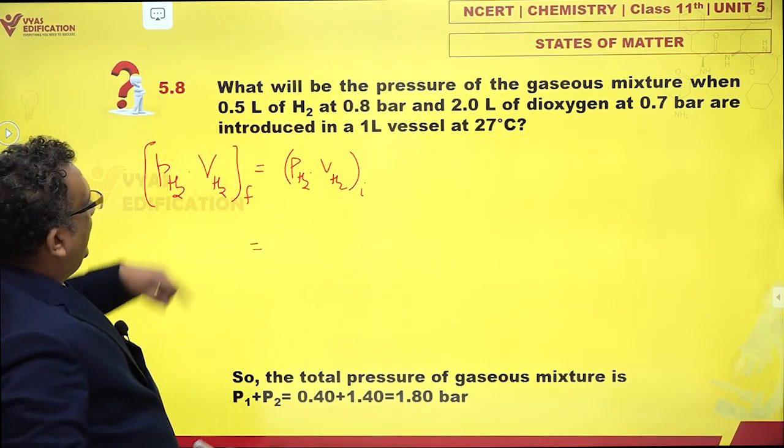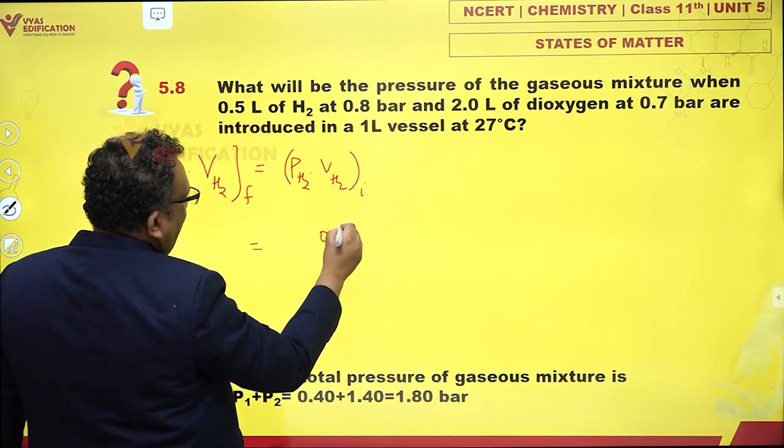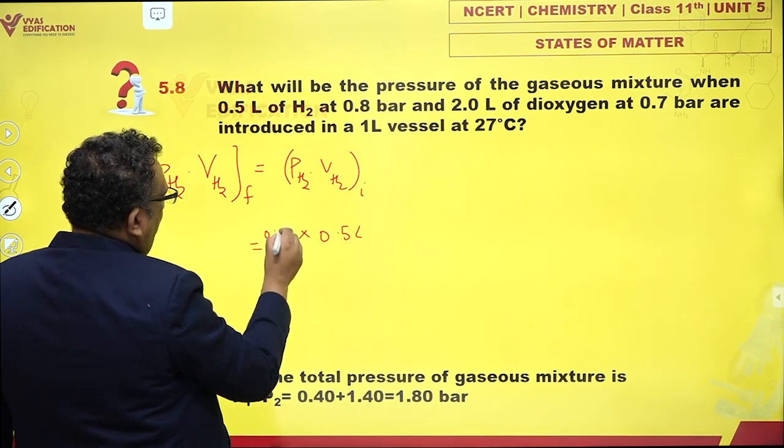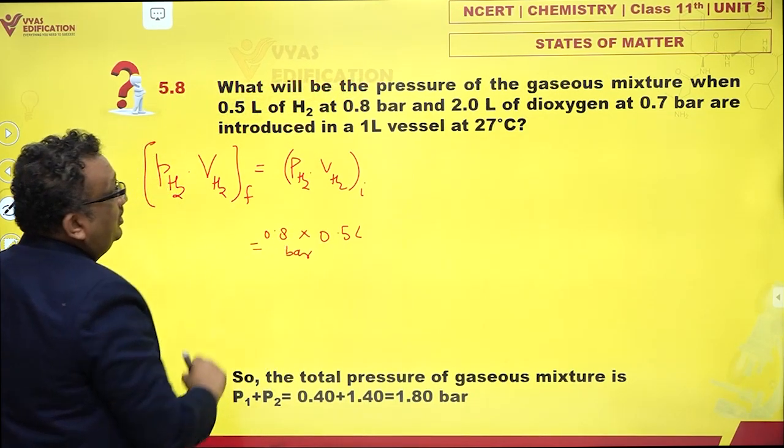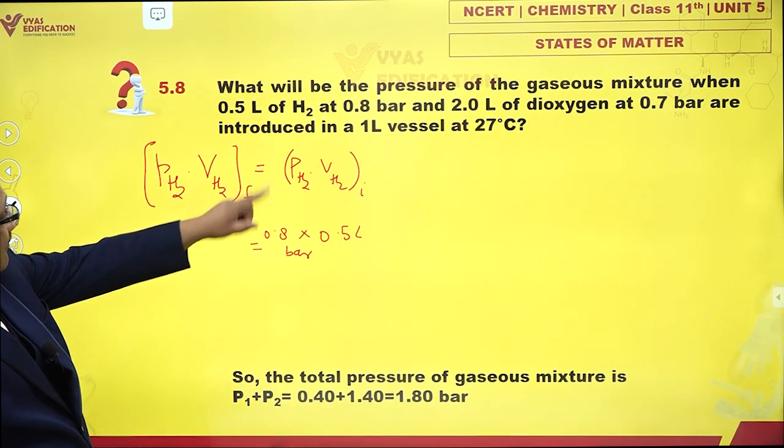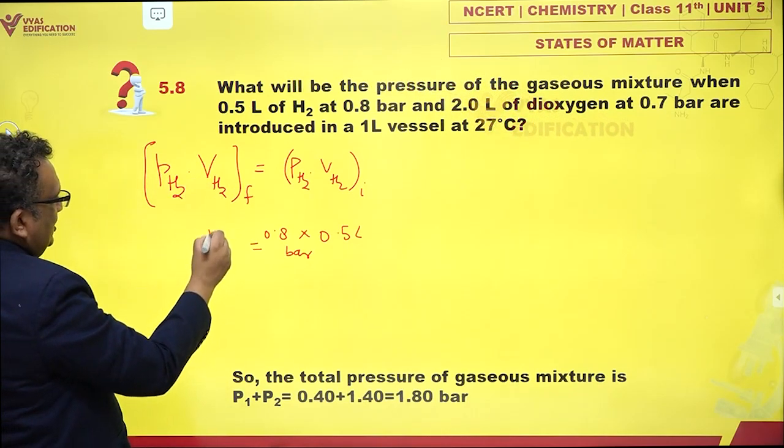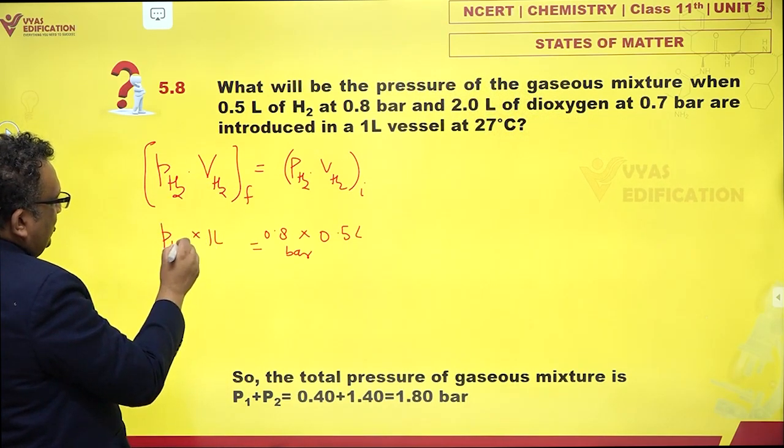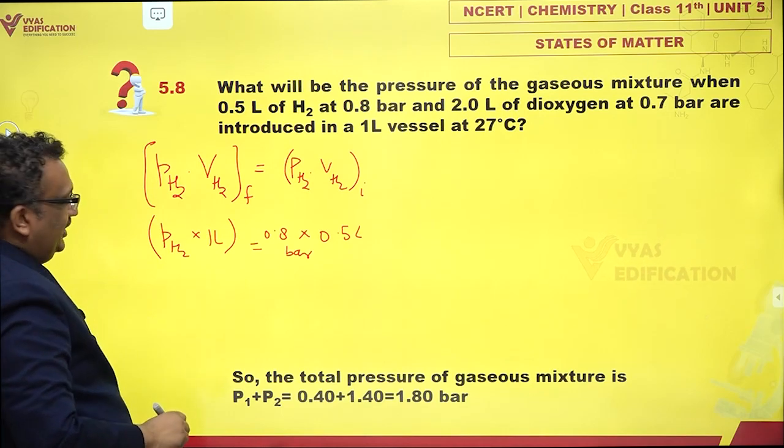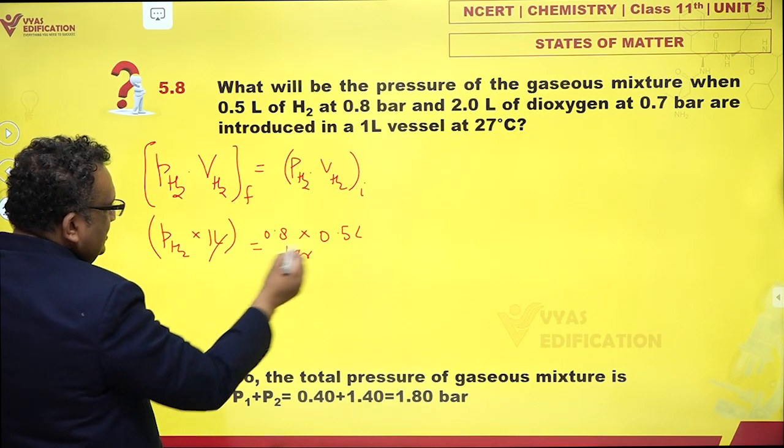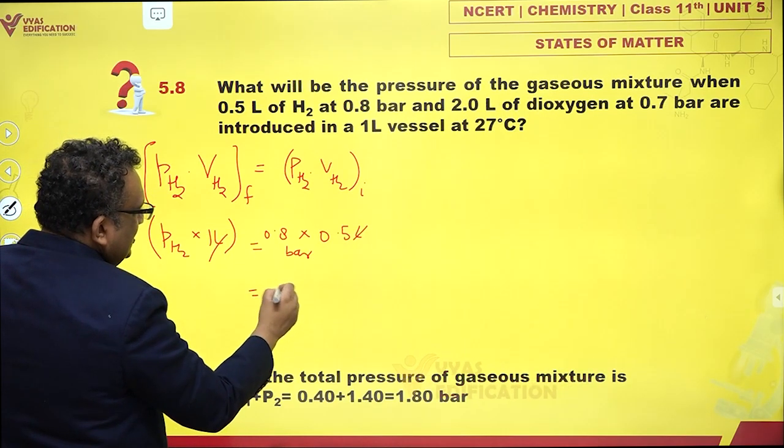What was initially? I had volume of hydrogen 0.5 liters and pressure is 0.8 bar. Finally I have a 1 liter vessel, so volume of hydrogen is 1 liter into partial pressure of hydrogen - we don't know finally.